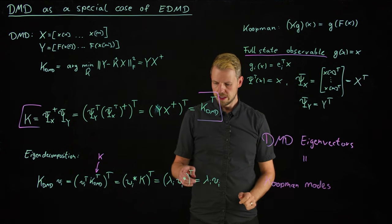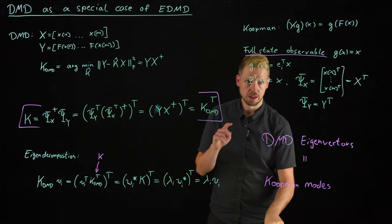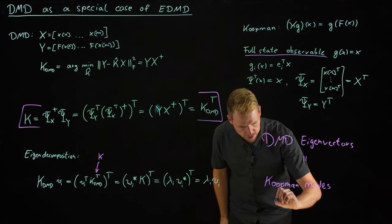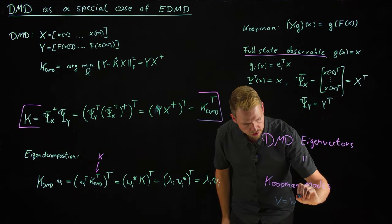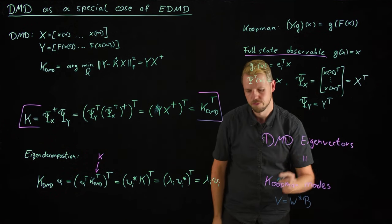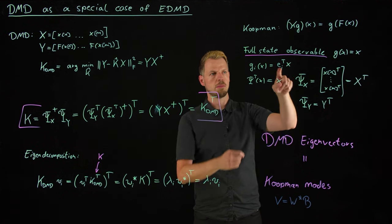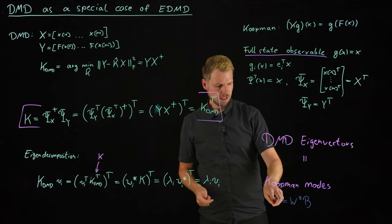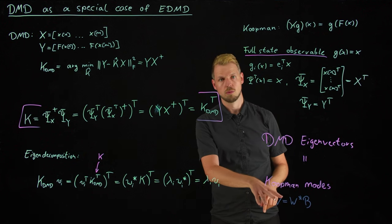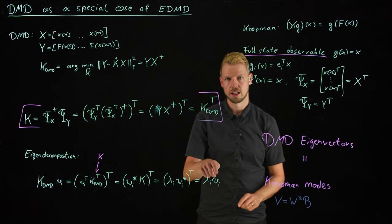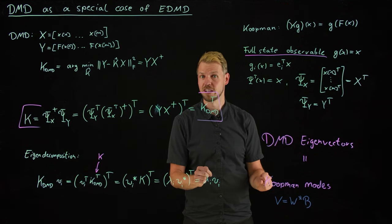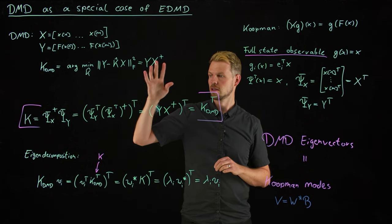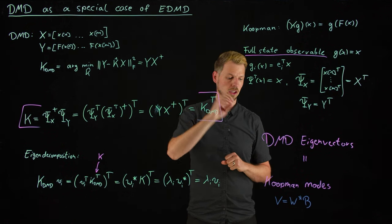And so here's the conclusion that the DMD eigenvectors are our Koopman modes. Why? Because what we had before was we needed our Koopman modes were V equal to the right eigenvectors times the basis matrix. So what we had was V was equal to W star times the B matrix. But because we have picked this very specific dictionary, the B matrix is in fact the identity matrix. And we see that the eigenvectors, the V here is what we call the Koopman modes before. But as you see, they are in fact the same. So what we get using DMD is an approximation of the Koopman eigenvalues and the Koopman modes.